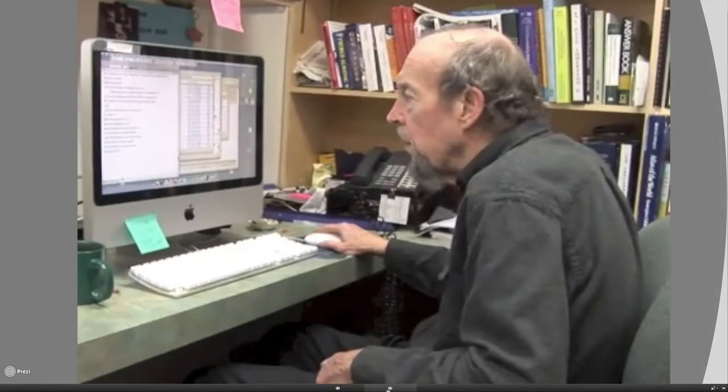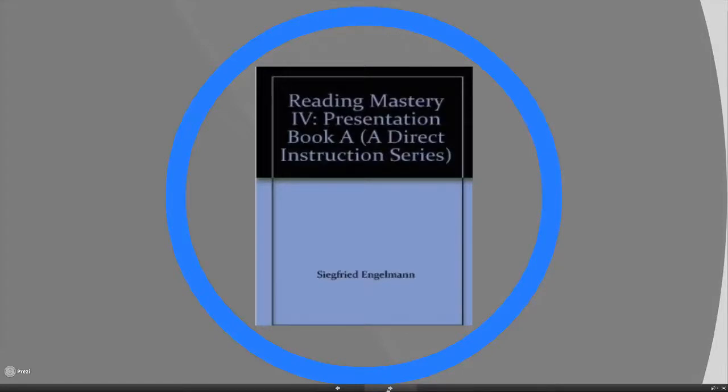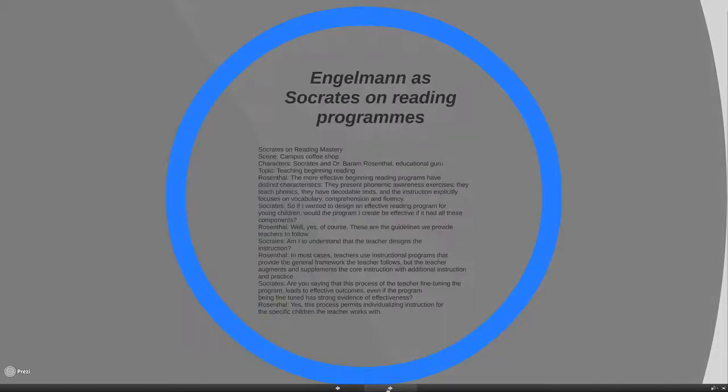And here he's in one of his blogs, pretending to be Socrates, the great philosopher who used to stand in open areas and just debate with people and ask them uncomfortable questions. Socrates in this case is going to be asking a guy by the name of Rosenthal some rather tough questions about reading programs. Now you have to bear in mind that Engelmann has produced one of the most successful scripted reading programs in America and currently spreading across the world. And the second spoiler alert is that Engelmann hates anyone interfering with the actual script, the sequence that he's produced. He feels he's worked out the best sequence and woe betide anyone who actually tries to go against that sequence.